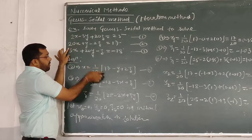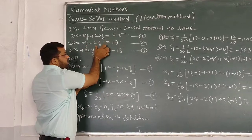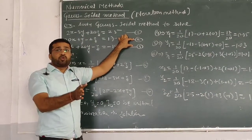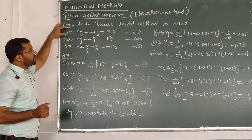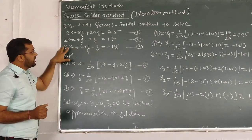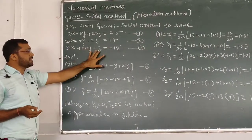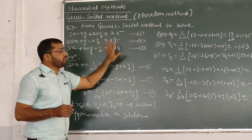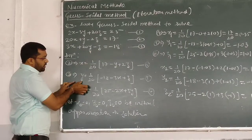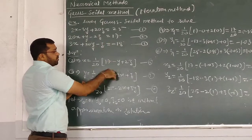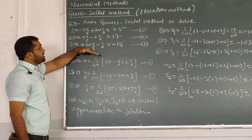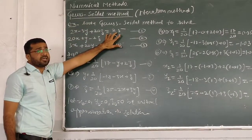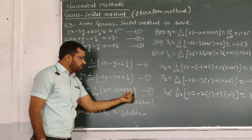From equation 2, x = (1/20)(RHS − y + 2z). Next, we check equations 1 and 3 for y. In equation 3, y has the largest coefficient, and the sum of moduli of the other coefficients equals 4, which is satisfied. So we use equation 3 to find y: y = (1/20)(−18 − 3x + z). Only equation 1 remains for z, and it satisfies the condition, so z = (1/20)(expression in x and y).